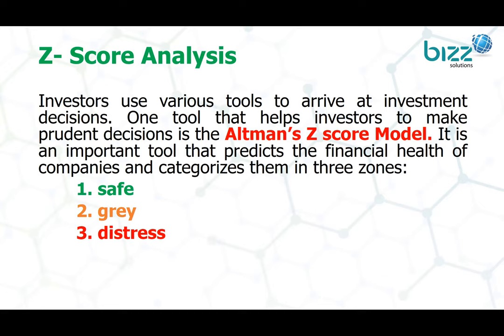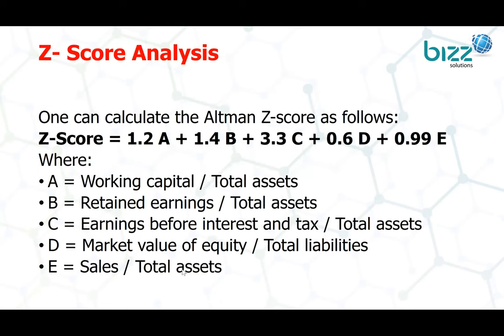One important tool that helps investors make prudent decisions is the Altman Z-score model. It predicts the financial health of an organization and categorizes it into three zones: safe zone, gray zone, and distressed zone. In this model, working capital divided by total assets has a weight of 1.2, retained earnings divided by total assets is component B, and EBIT divided by total assets is C, with a weight of 3.3.